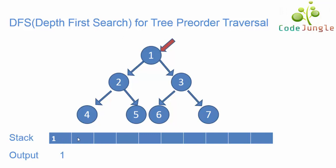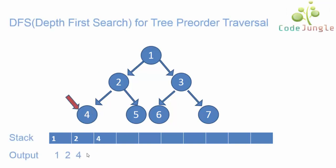Next the system checks which is the topmost element in the stack. Here the topmost element in the stack is 1. So again the system checks the leftmost child node for this element, which is 2. Hence 2 is included in the output and at the same time is included in the stack. Again the system checks which is the child element for the topmost element. Here the topmost element is 2 and the leftmost child element for 2 is 4.